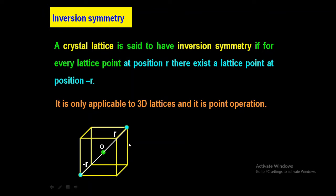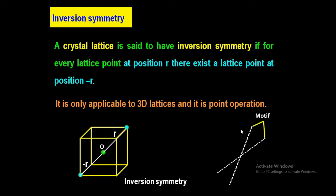We will understand another example using a motif. Suppose this is a motif represented by the symbol 7. A motif is a particular arrangement of lattice points or atoms in a particular order. This motif represented by symbol 7 is inverted about a point O. So this is the symbol 7 motif and this is the inverted symbol 7. This motif is inverted about point O, so O is called the inversion center and the crystal is said to have inversion symmetry.